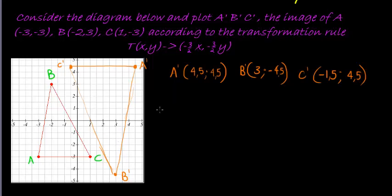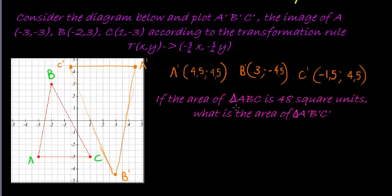What if we had to do the area? The second part of this question: if the area of triangle ABC is 48 square units, what is the area of triangle A accent B accent C accent? We see that it has changed in two directions with the same factor, it was enlarged by that factor, which means that the area of triangle A accent B accent C accent is equal to K squared, where K is that factor we multiplied with both coordinates, K squared times the area of triangle ABC.